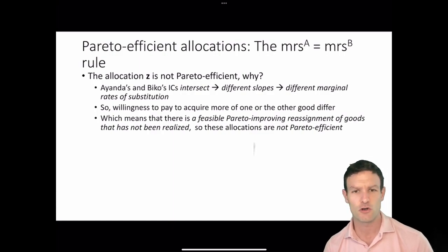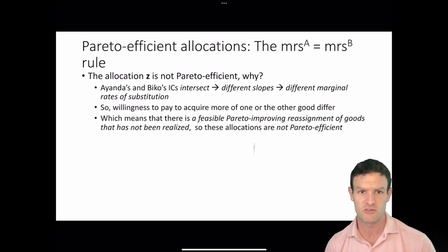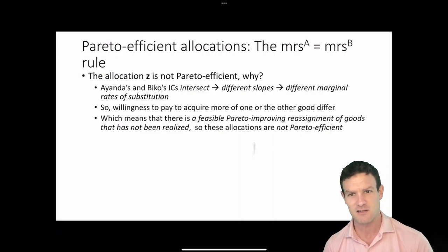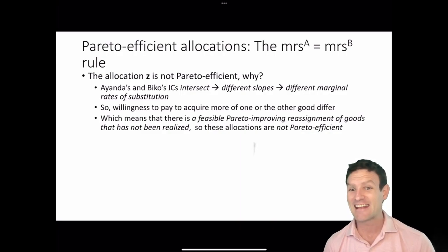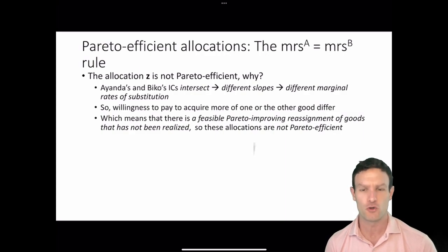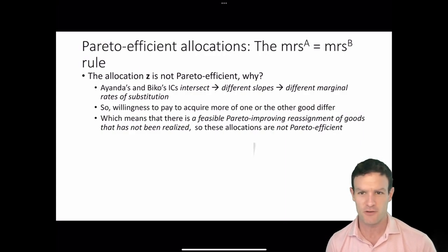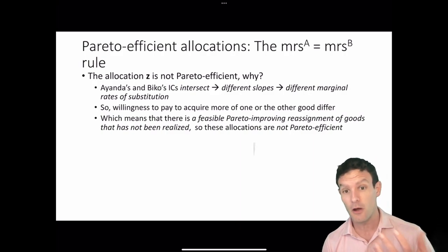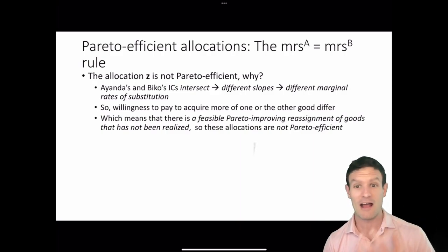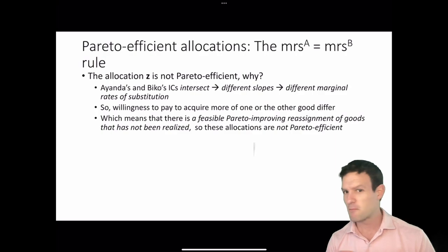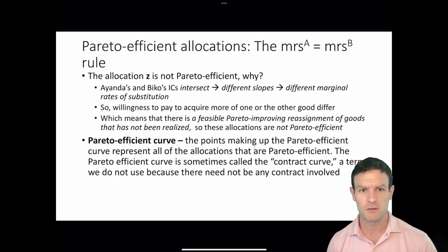There are going to be feasible Pareto improving reassignments of goods that have not been realized at point Z. They can engage in exchange with each other in order for them both to do better. Therefore, Z is not Pareto efficient — there are alternative Pareto superior allocations to point Z because their marginal rates of substitution are not equal.